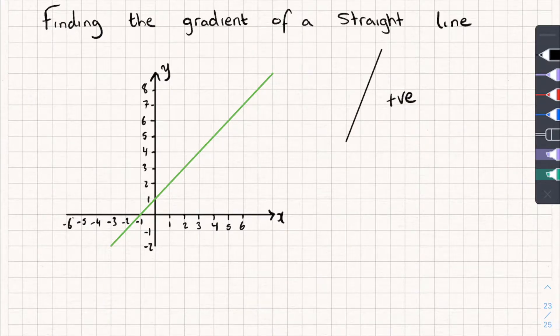If our gradient is negative, then our line is going to be decreasing like this. And the more positive it is, the steeper it's going to be, and the more negative it is, the steeper it's going to be, but going downhill.